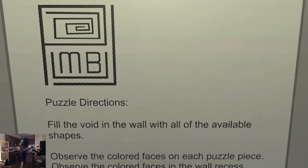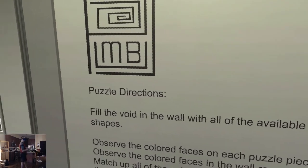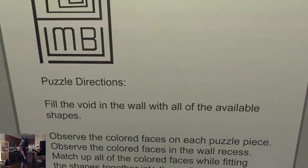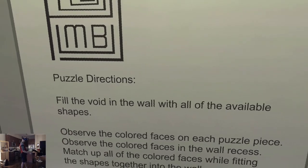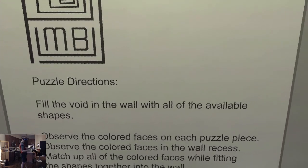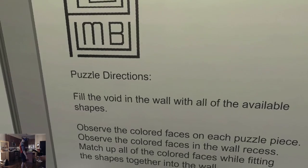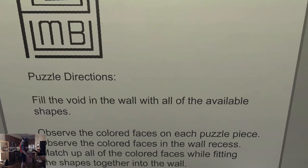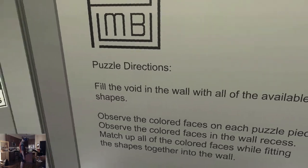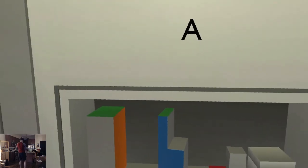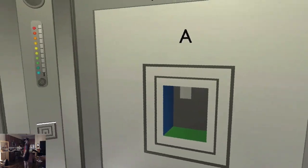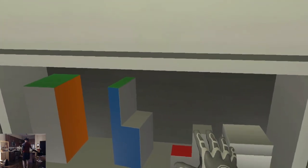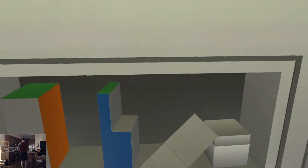Fill the void in the wall with all the available shapes. Observe the colored faces on each puzzle piece. Observe the colored faces in the wall recess. Match up all of the colored faces while fitting the shapes together into the wall. I get it — they all go in there. We got that first one correct.